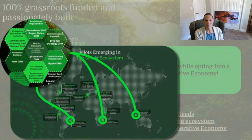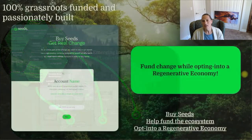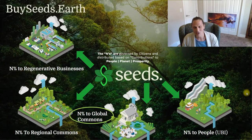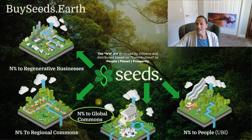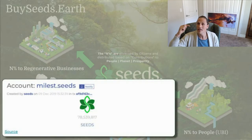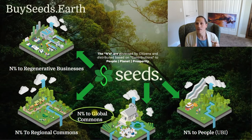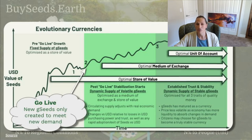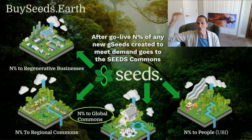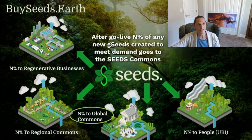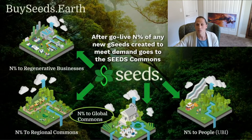We can start funding people to go to communities on the ground, teach them how to use these tools, create circular economies, and help people transition. The Seeds commons currently holds about 77-78 million Seeds set aside to fund development toward go-live, which they sell on buyseeds.earth. After go-live, the Seeds commons gets funded through the economic system — when new Seeds are created due to new demand, a percentage goes to the global commons to continue selling from buyseeds.earth, funding each season as we go forward. This is how we can perpetually run this financial system while maintaining stability.